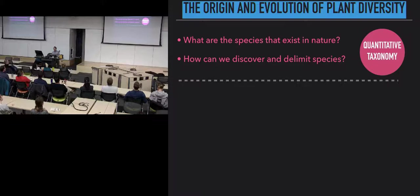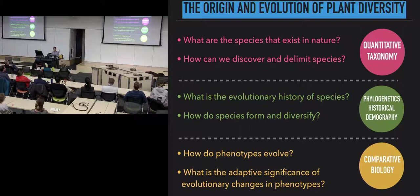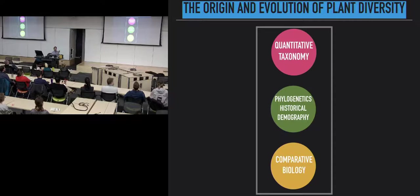In my lab, we ask questions ranging from classic taxonomy, species delimitations, and species discovery. We have been doing some work on methods for species delimitations. We reconstruct demographic and evolutionary history of lineages using molecular data to ask questions about processes of diversification, speciation, and radiation of major clades. We also use phylogenies to ask and answer questions on how phenotypes evolve, how the relationship of phenotypes to diversification relates, and some of these phenotypes could be from anatomical phenotypes all the way to transcriptomes. We integrate these approaches in what I call an integrative view of systematics.